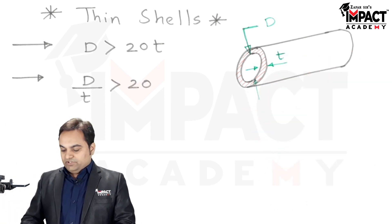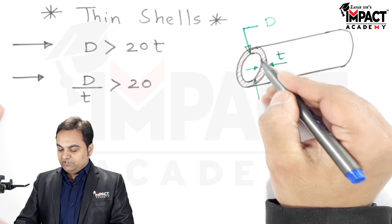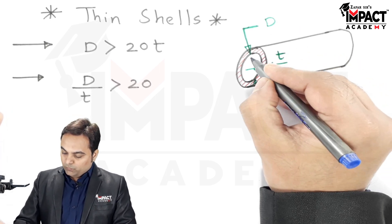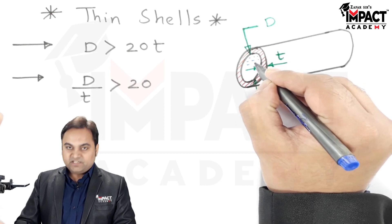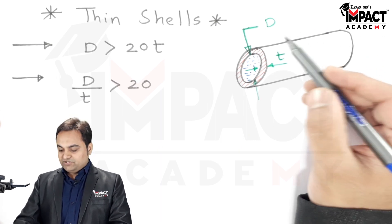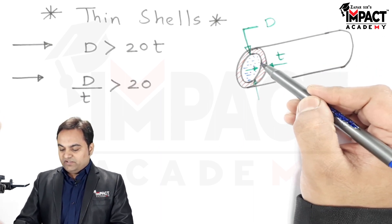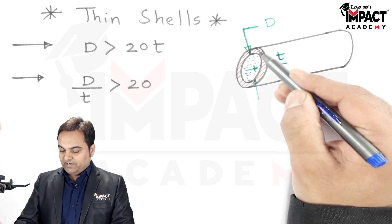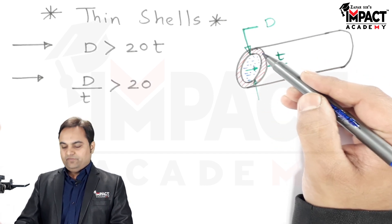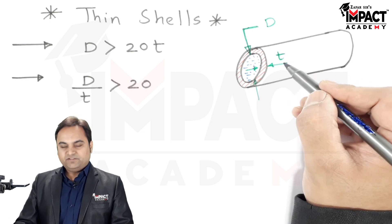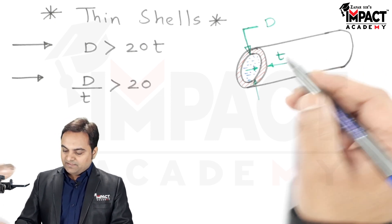Here I have drawn a thin shell which is having an internal diameter of capital D. The thickness of the shell is small t, which is used to store the pressurized liquid or pressurized fluid. And in case of thin shells, there is very little difference between the internal diameter and the external diameter.